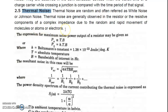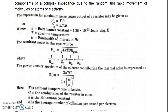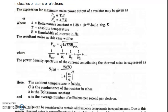Thermal noise arises due to the random and rapid movement of molecules, atoms, or electrons. At a certain temperature, there is movement of molecules or electrons or charges, and those movements are random in nature. Due to those random movements, there is a generation of thermal noise.